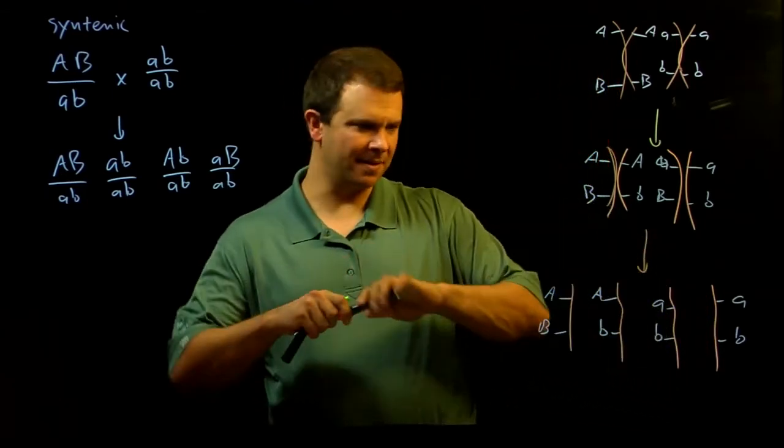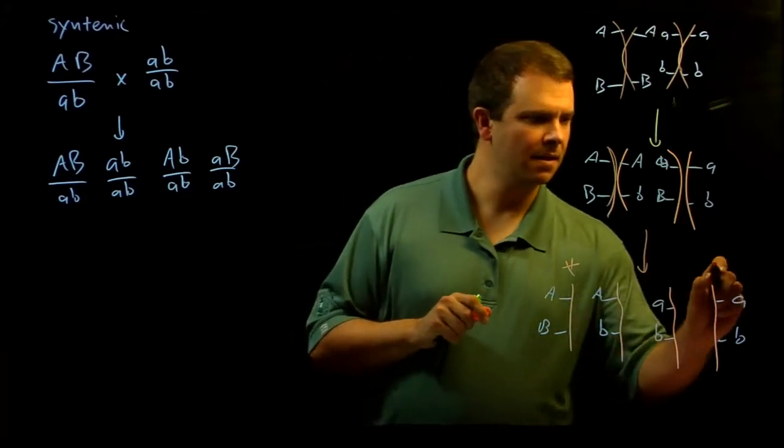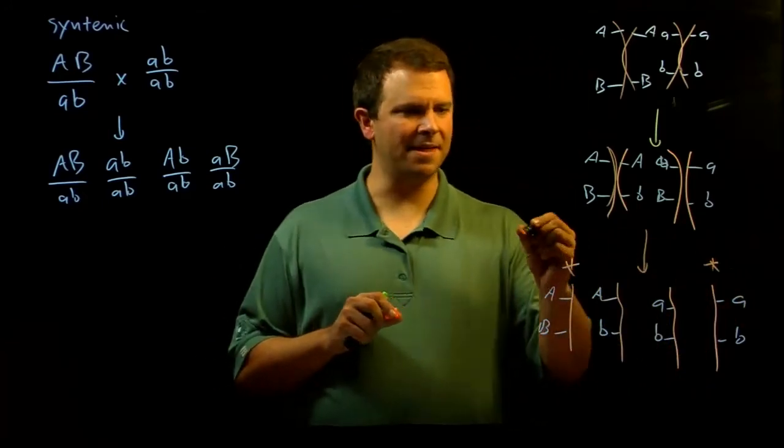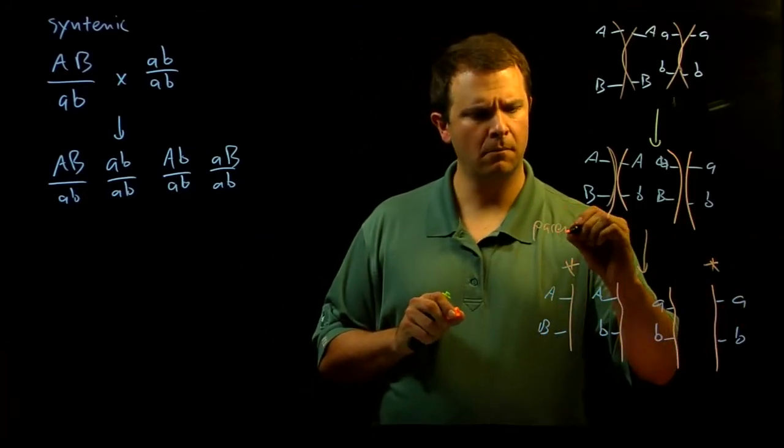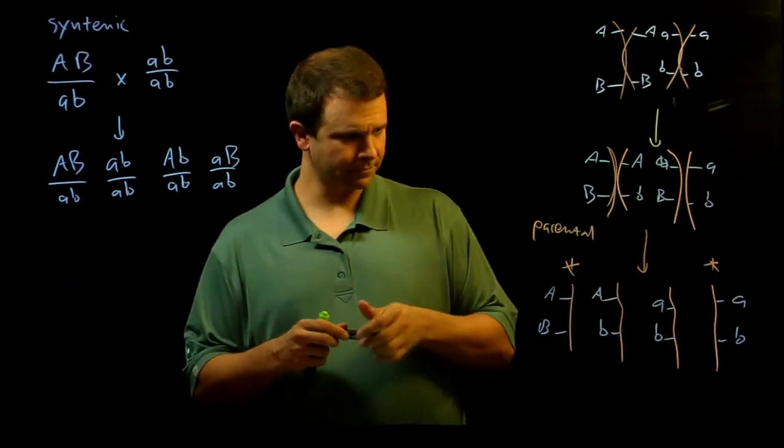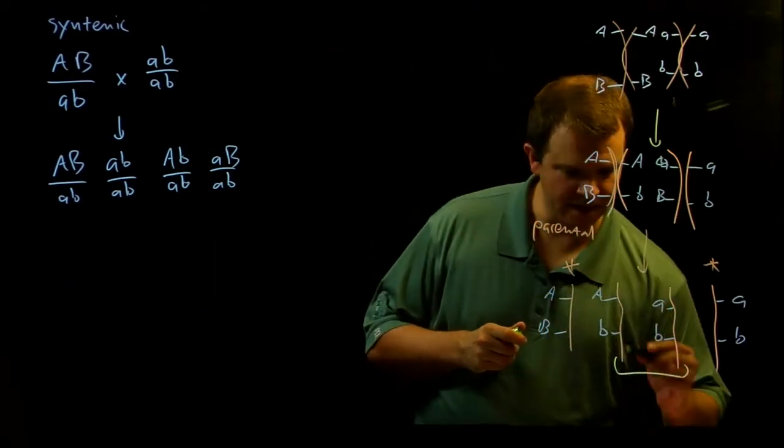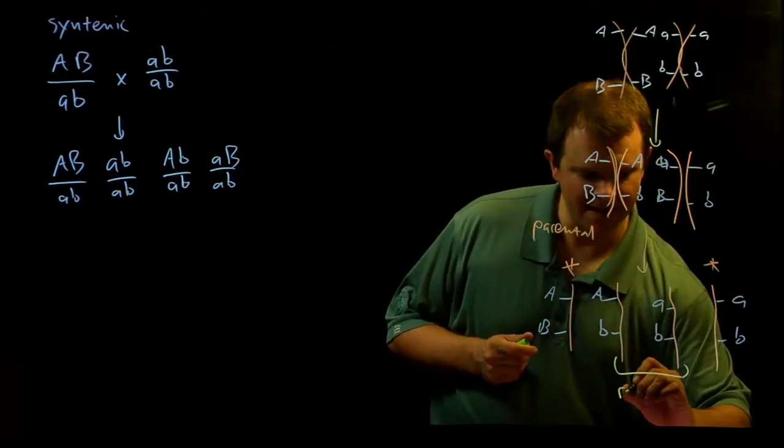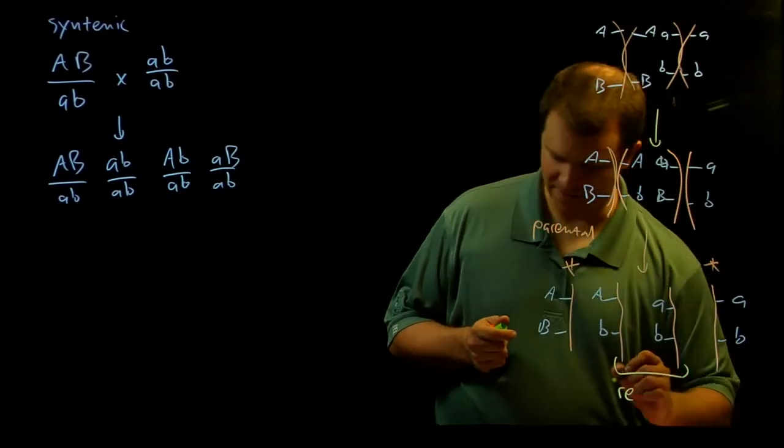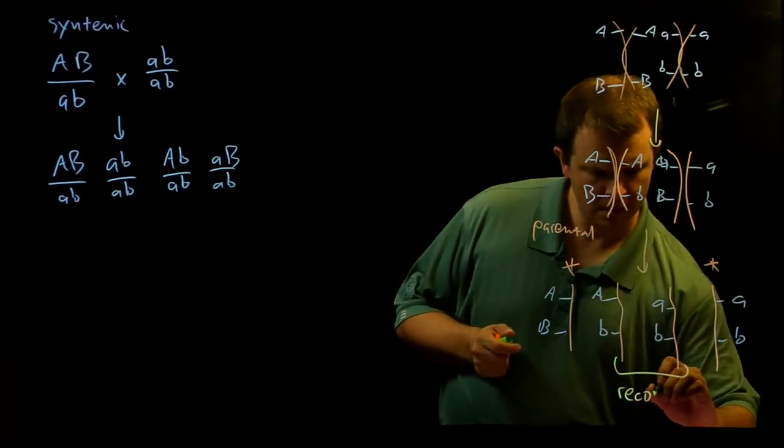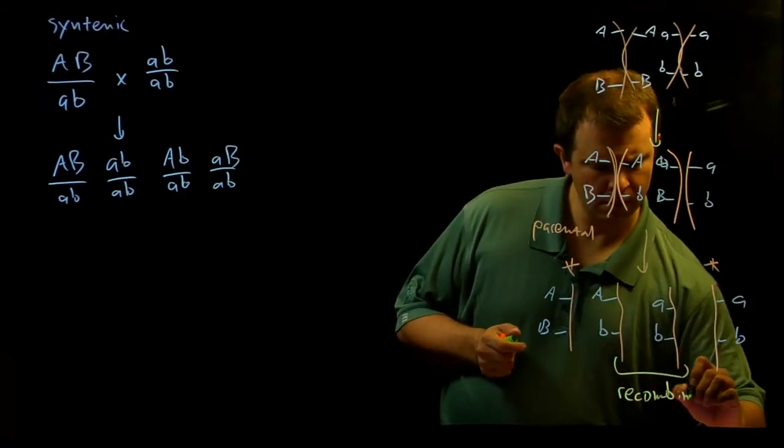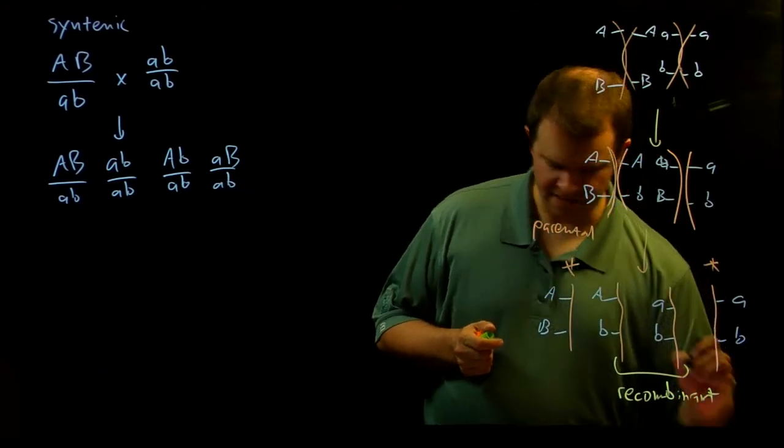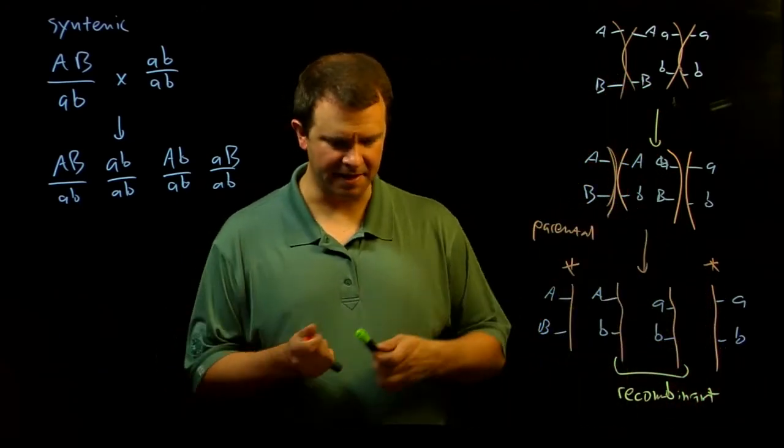And these gametes we say are recombinants. So again, those two gametes we call parental, and these two gametes right here, because they've had the swapping over happen, we call them the recombinant types.